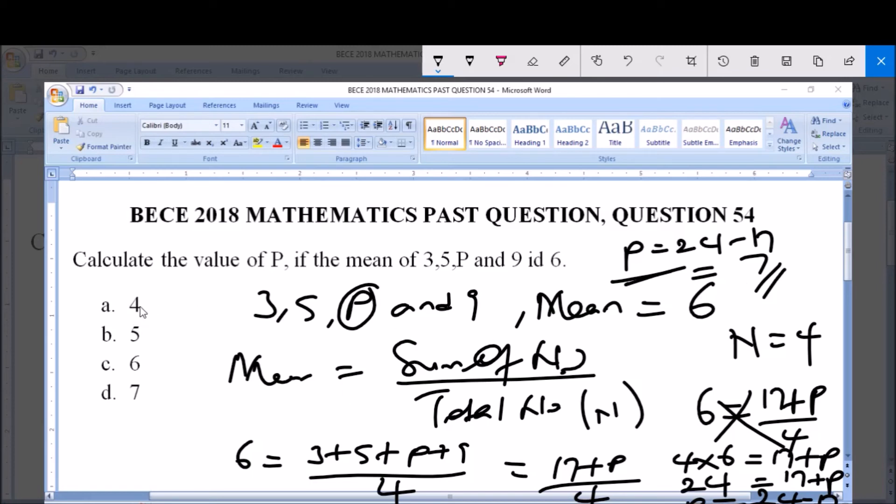Now from the options, option A says 4 which is wrong, B says 5 which is wrong, C says 6 which is wrong, and D says 7 which is correct. So option D is the correct answer, 7. Thank you very much and God bless you. Please like and subscribe to our channel for more videos.